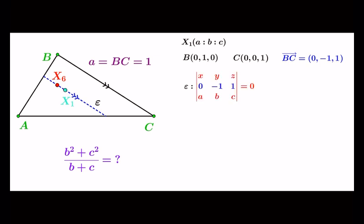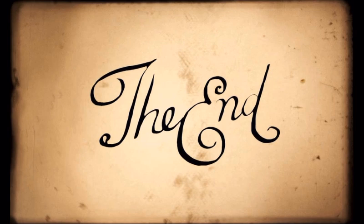Point X6 has barycentric coordinates a squared, b squared, c squared, and since we know it lies on epsilon we can plug them into the equation of epsilon. So, by calculating the determinant we find the requested value to be equal to 1. At this point, our presentation is complete. Thank you for watching us.